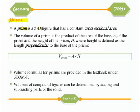Prisms are 3D figures that contain a constant cross-sectional area — when you cut the shape in one direction you'll get the same shape every single time. The volume of a prism is the product of the area of the base, A, and the height of the prism, H, where height is defined as the length perpendicular to the base. Perpendicular means at right angles, so the volume of a prism is given by V = AH. Volume formulas for prisms are provided in the textbook under the Geometry F section.